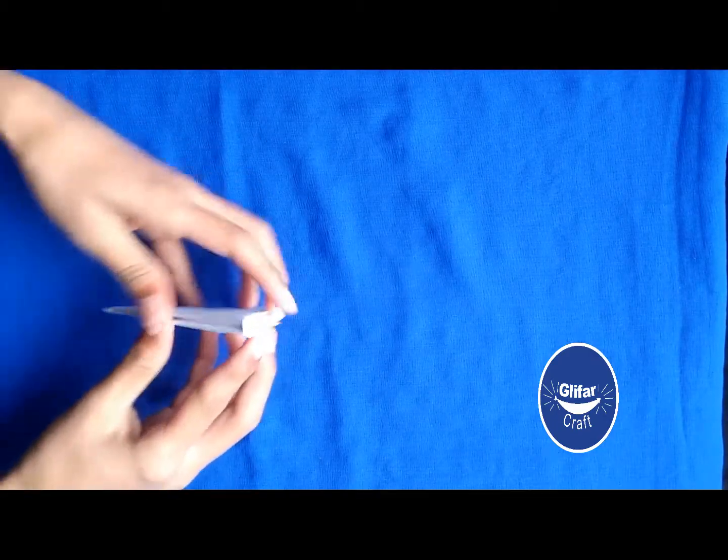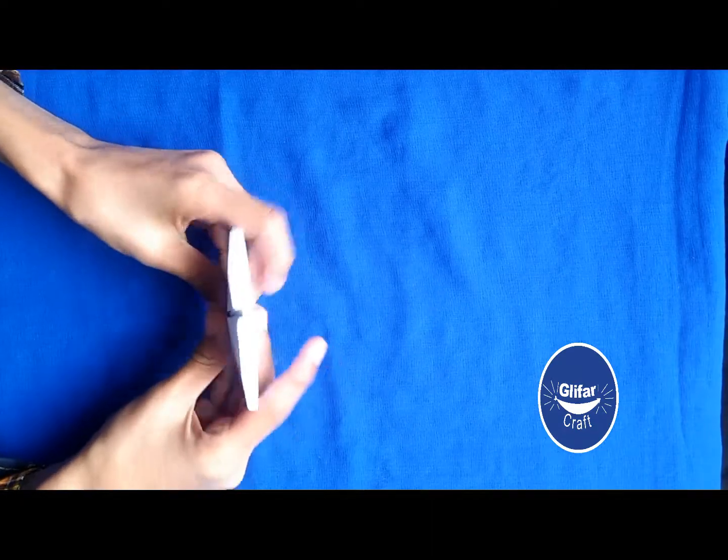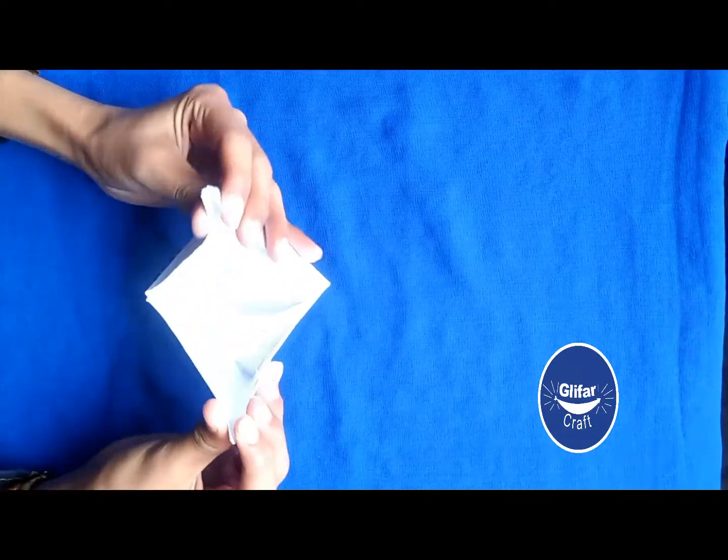Now, open the paper as shown and crease well. Pull out the boat flaps.